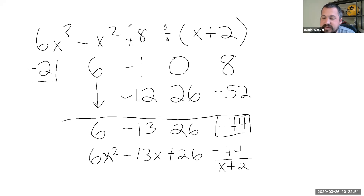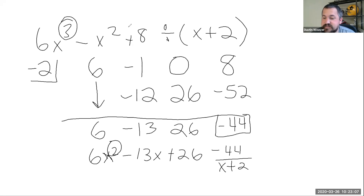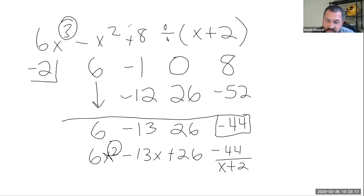Remember: anytime your problem starts at the third power, your answer starts at the second power and works down one power at a time. Questions four and six did not skip a power, so you don't need a zero placeholder there. But question seven skipped a power, so that zero is important.